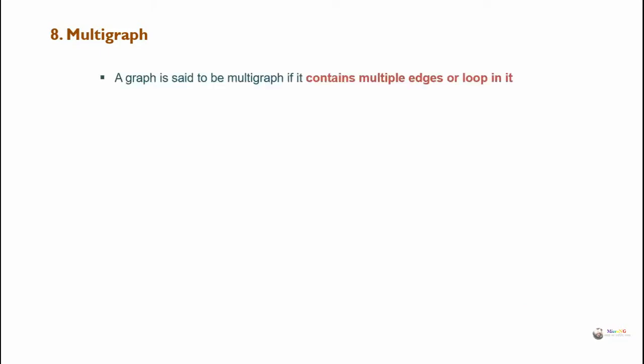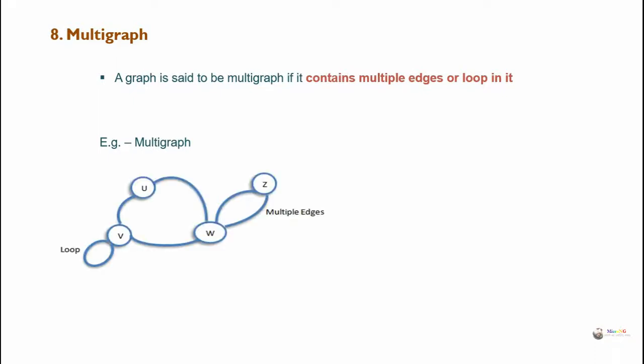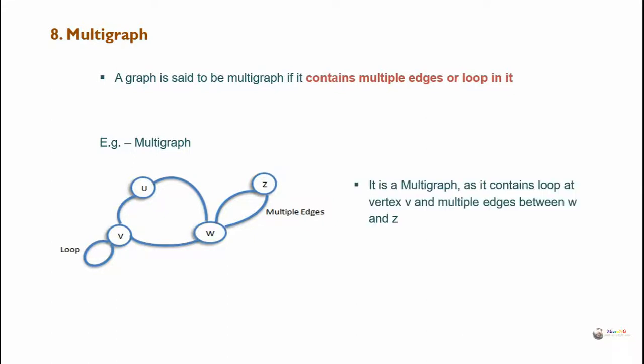Multigraph: a graph is said to be a multigraph if it contains multiple edges or a loop in it. In the example, there is a loop at vertex v where the starting and terminal vertex are the same, and there are multiple edges between vertices w and z.